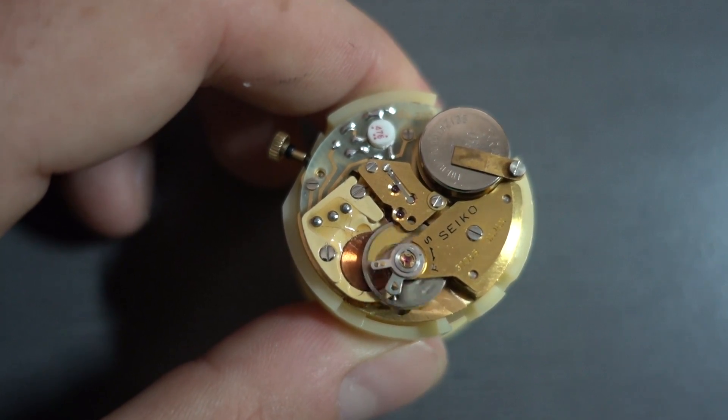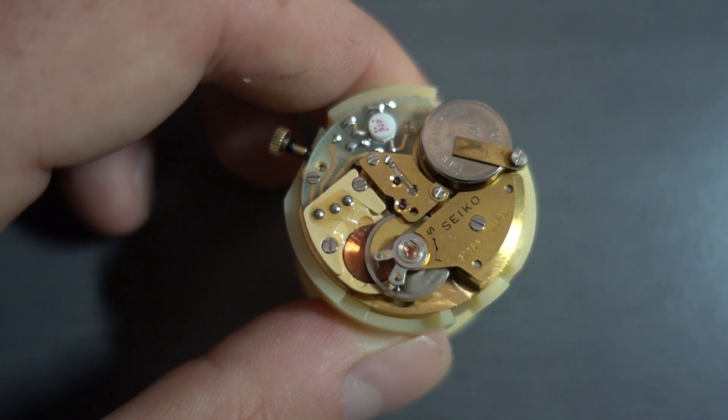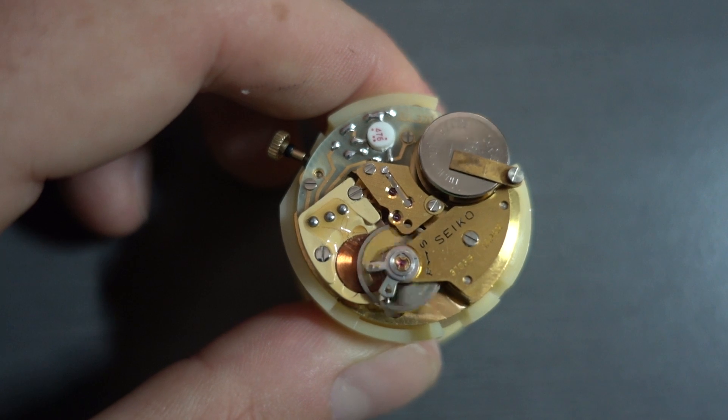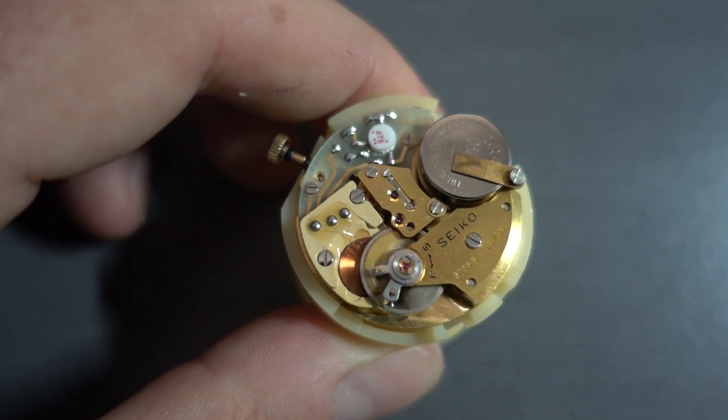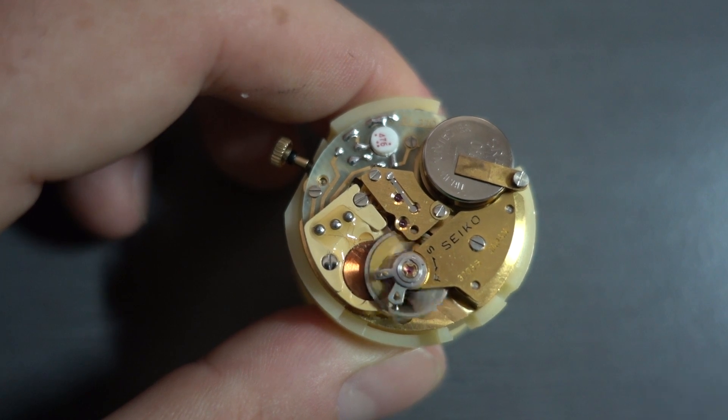This is a quick video to show the running of a Seiko EL370 movement, which is also known as a 3703 by the original part number or reference number.